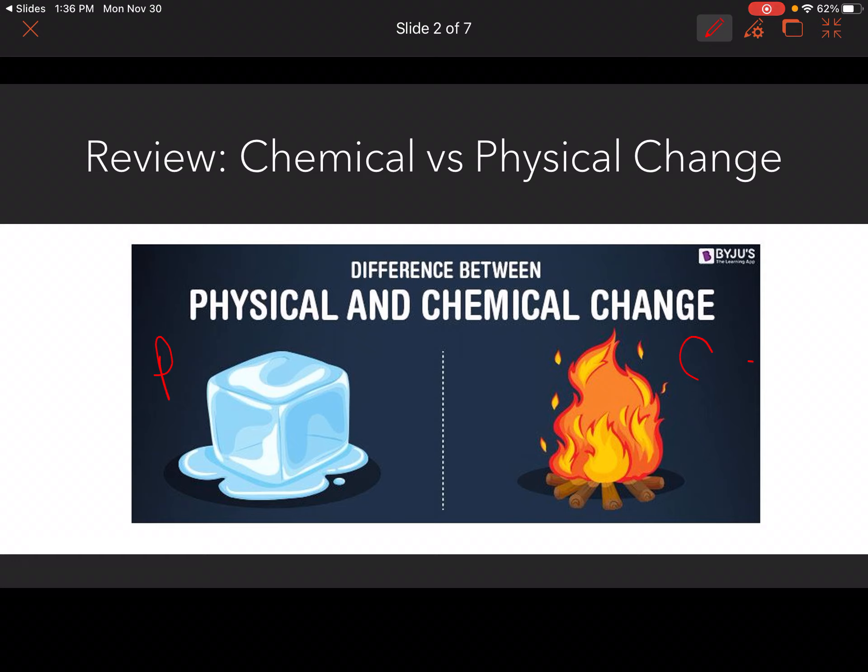Now that difference is not actually true and it usually is true but not always. So the main difference between physical and chemical changes is that in a chemical change a new substance is produced, as opposed to a physical change where no new substance is produced and it's just the shape or the state that changes.